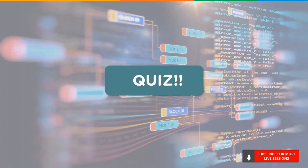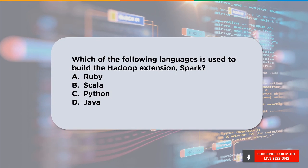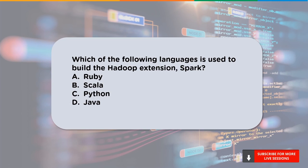Now back to the quiz — brace yourselves! The quiz question is: which of the following languages is used to build the Hadoop extension Spark? The options are A: Ruby, B: Scala, C: Python, or D: Java. Comment your answers in the chat section. One lucky winner will win an Amazon voucher — drop in your answers quickly!